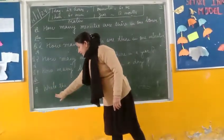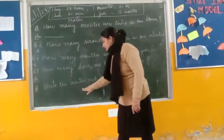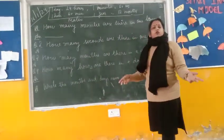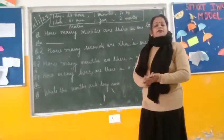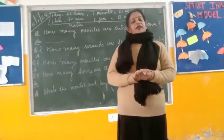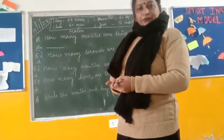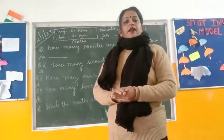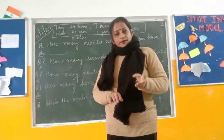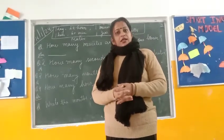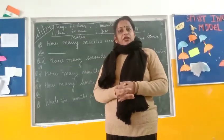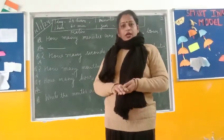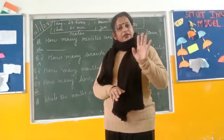Question number 5: Write down the months and days names. Everyone knows how many days are there in a week. In a week there are 7 days: Sunday, Monday, Tuesday, Wednesday, Thursday, Friday, Saturday. You will write all 7 names.